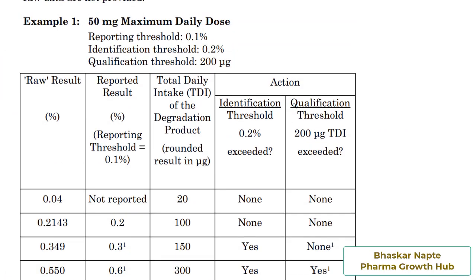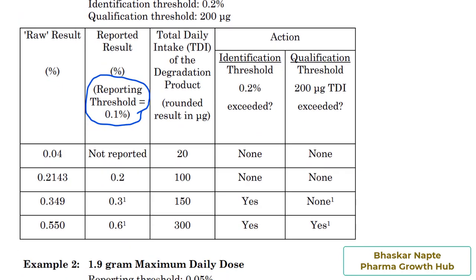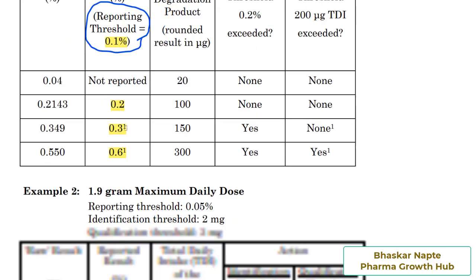Let's look at example number one from the guidance document. The maximum daily dose is 50 mg, which is absolutely less than one gram. Therefore, the reporting threshold is 0.1%, which has only one digit after the decimal place. You can see that the impurities reported in this example all have one digit after the decimal: 0.2%, 0.3%, 0.6% — because the applicable reporting threshold has one digit after the decimal.